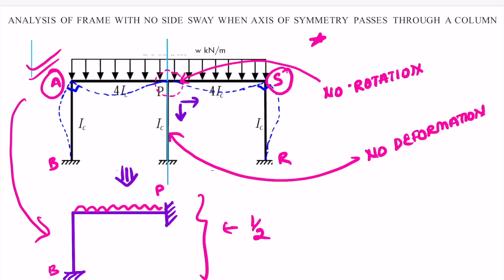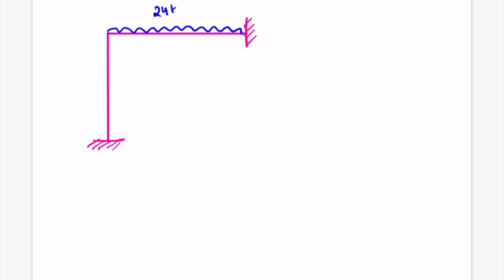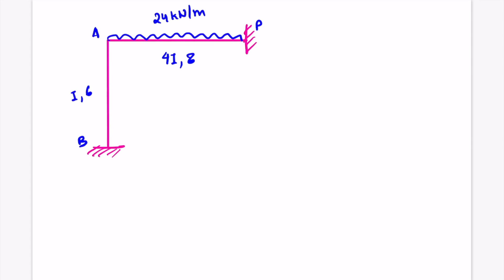Now let us use this concept to solve the problem. We have our simplified structure and will solve only half of the frame. The loading is 24 kilonewtons per meter, the length is 8 meters and I is 4I for the beam member, and 1I with 6 meters for the column. This is joint A, this is joint P (which acts as fixed), and let's call the column end B.